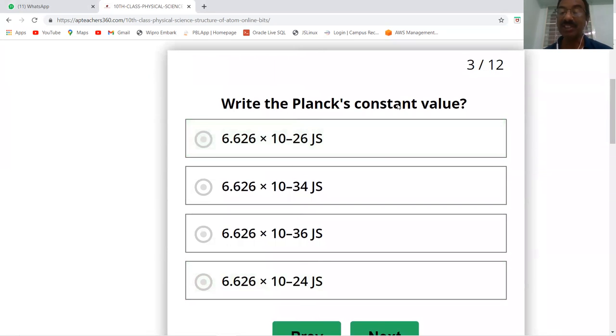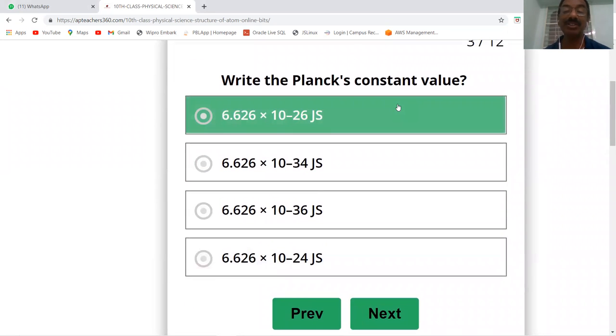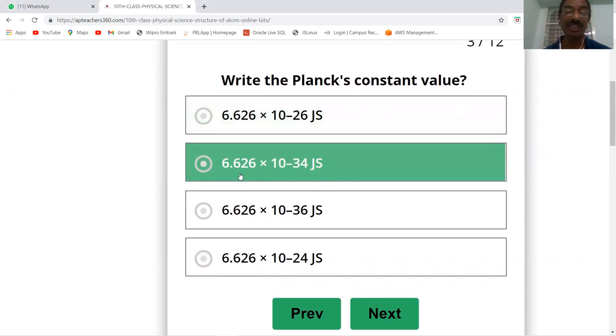Write the Planck's constant value. Planck's constant value is 6.626 × 10^-34 joules per second.